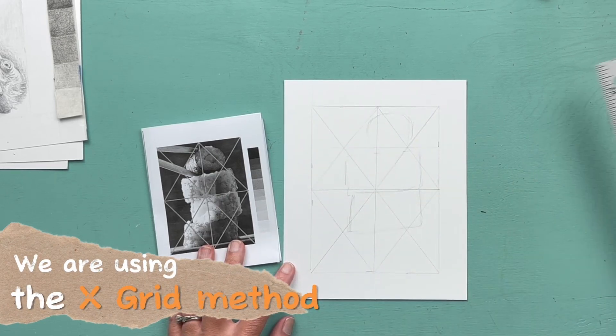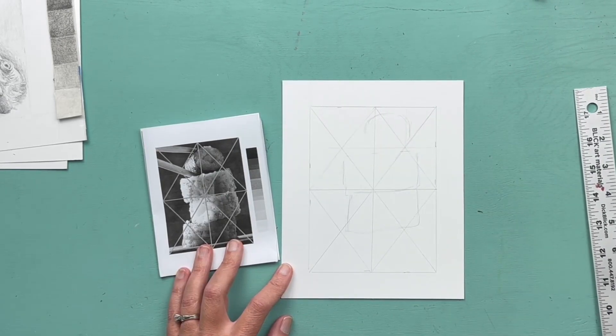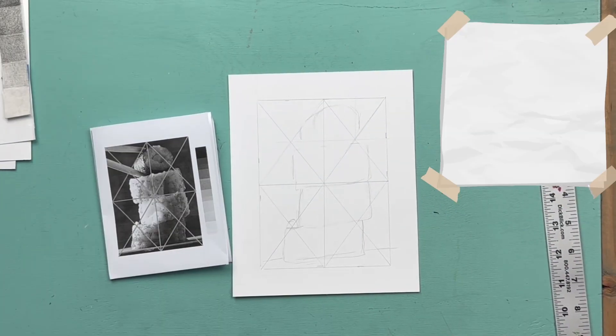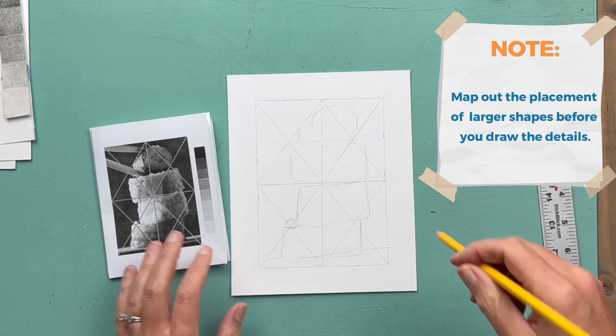Here I'm using the x-grid. I like to use the x-grid because it involves minimal measuring. You simply draw a line from corner to corner, draw a line through the center, and you can break up each quadrant as you need it.